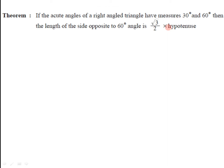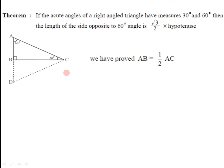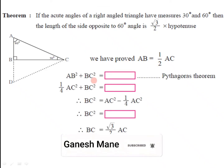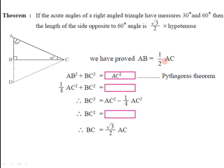Now this time we have to prove the length of the side opposite to 60 degree is root 3 by 2 times the hypotenuse. Consider the same diagram. We have also proved that AB is equal to half of AC in the previous part, and we have to use this. Now in triangle ABC, which is a right angle triangle, by using the Pythagorean theorem we can write AC squared is equal to AB squared plus BC squared.